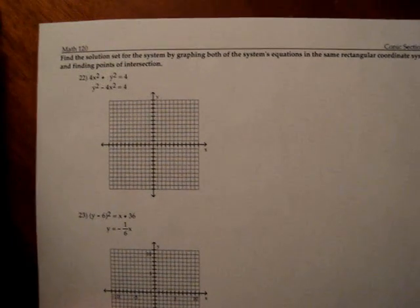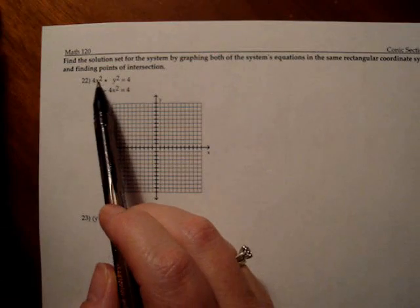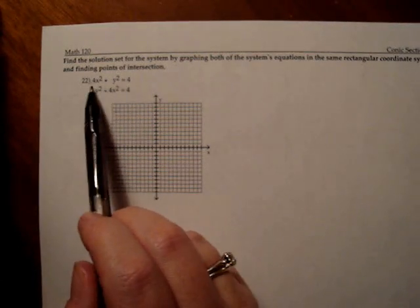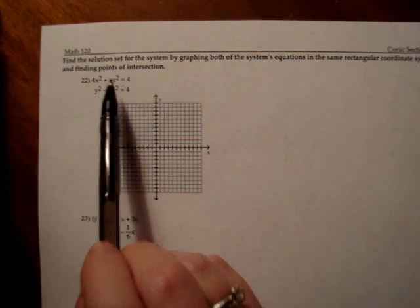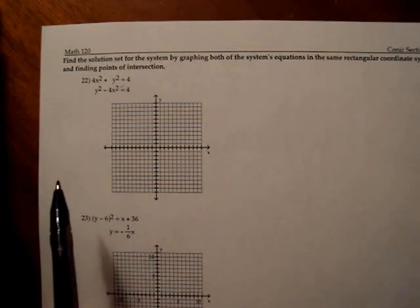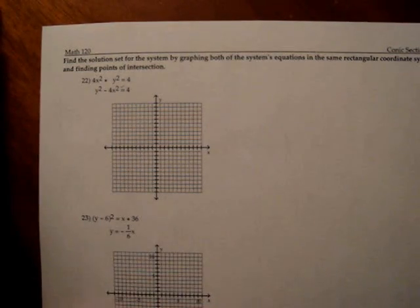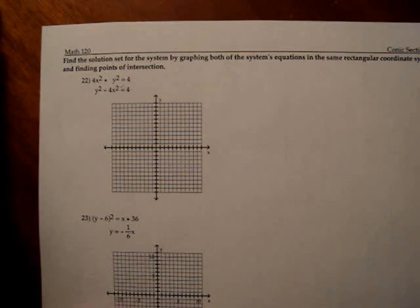Let's start by looking at number 22. Your first job is to identify what the graph of this equation is. So I see an x squared and a y squared, there's a plus between them, and the coefficients are different. So that is an ellipse.